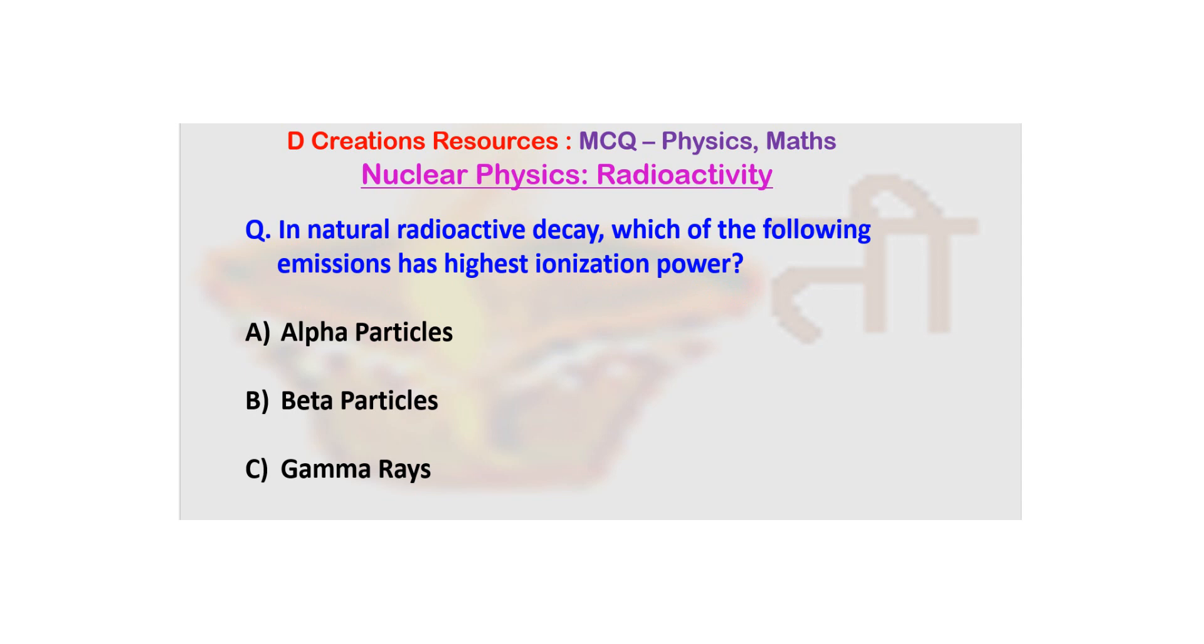Now in natural radioactive decay, the common emissions that we have are alpha particles, beta particles and gamma rays. And you need to check which one of them has highest ionization power.